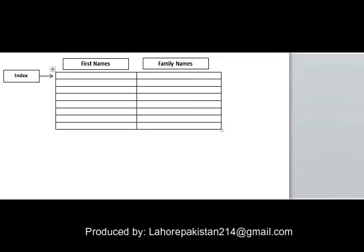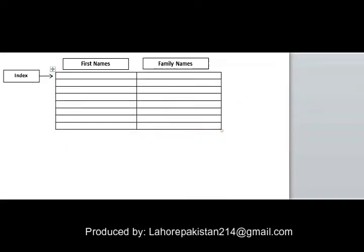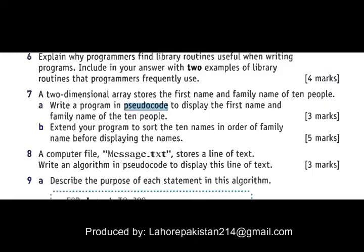Of 10 people, meaning there will be 10 rows in this array. Write a program in pseudocode — pseudocode means you do not need to write actual code — to display the first name and family name of the 10 people. You are supposed to assume that the names have already been written in the array, and you just have to display those names.